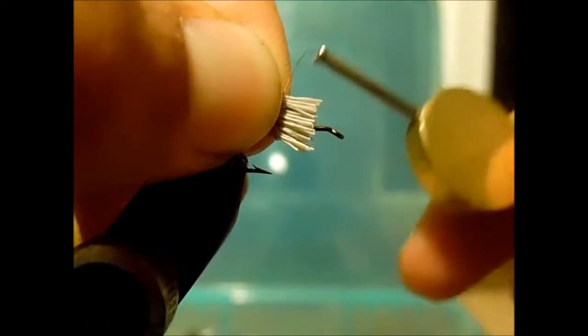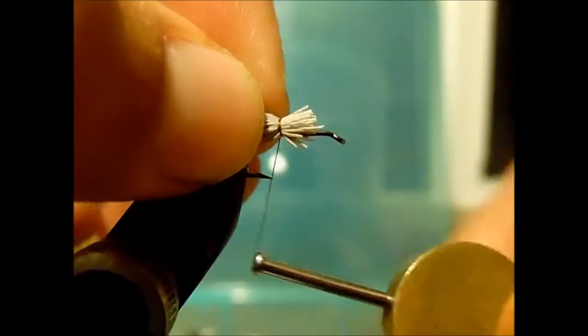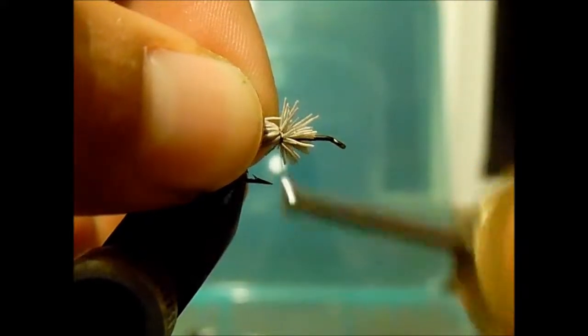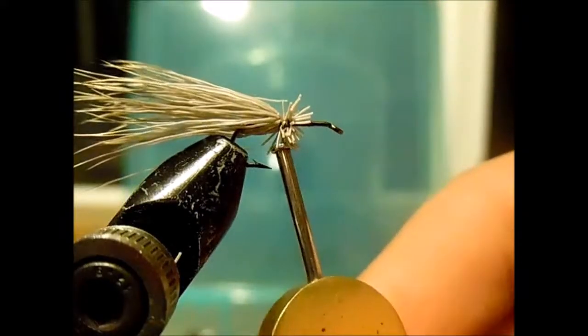Alright, so as you can see here, I have it nice and cut. Just going to start wrapping over the butt ends. Take two wraps, tighten down. As you can see they flare, so now I'm just going to wrap through those butt ends. That way it will not twist.